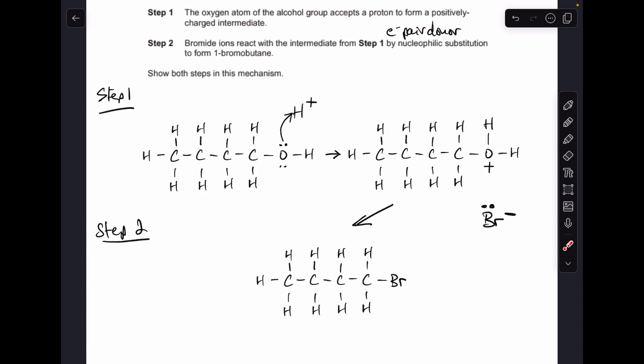And then moving on to step 2, we're told that the bromide ion reacts with the intermediate from step 1 by nucleophilic substitution to form 1-bromobutane.